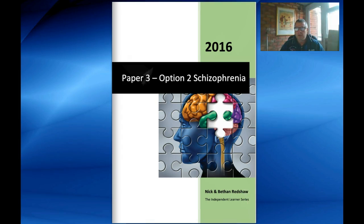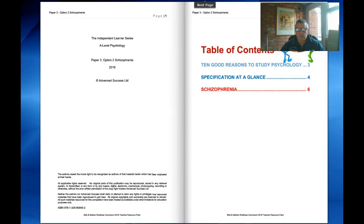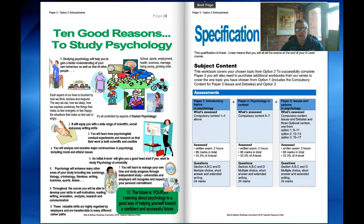I'm going to spend the next couple of minutes just introducing you to this workbook and letting you know that the workbook is supported on our YouTube channel. We have our normal table of contents like with all of our student workbooks, followed by 10 good reasons to study psychology and then specification at a glance. Specification at a glance just tells you what's needed for the exam and the questions that you need to cover for each paper.